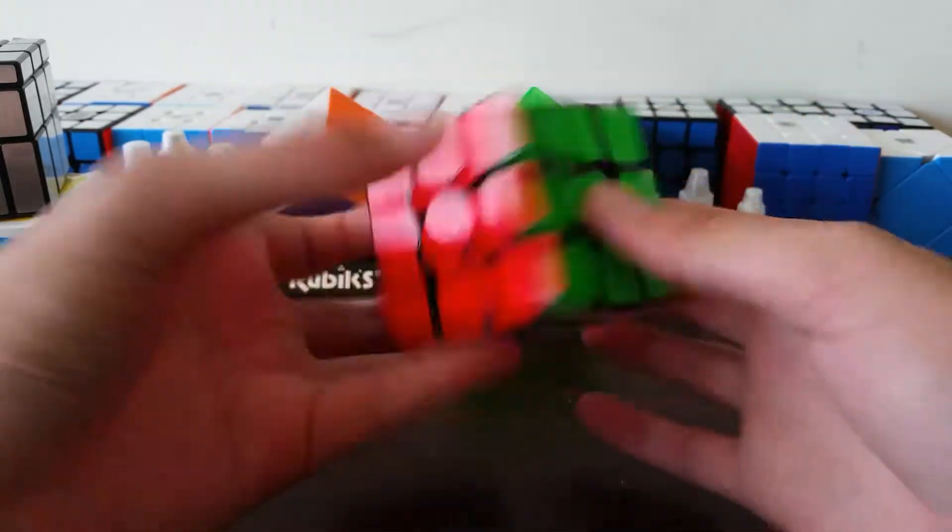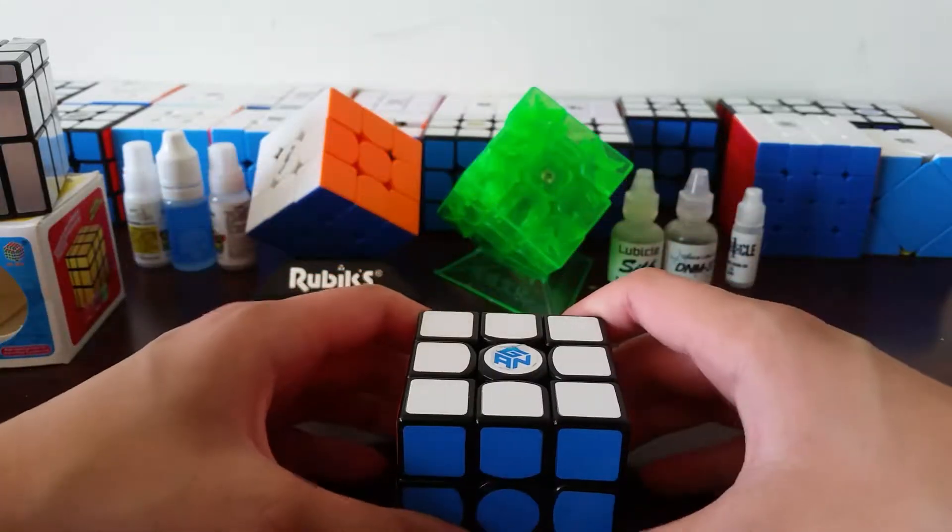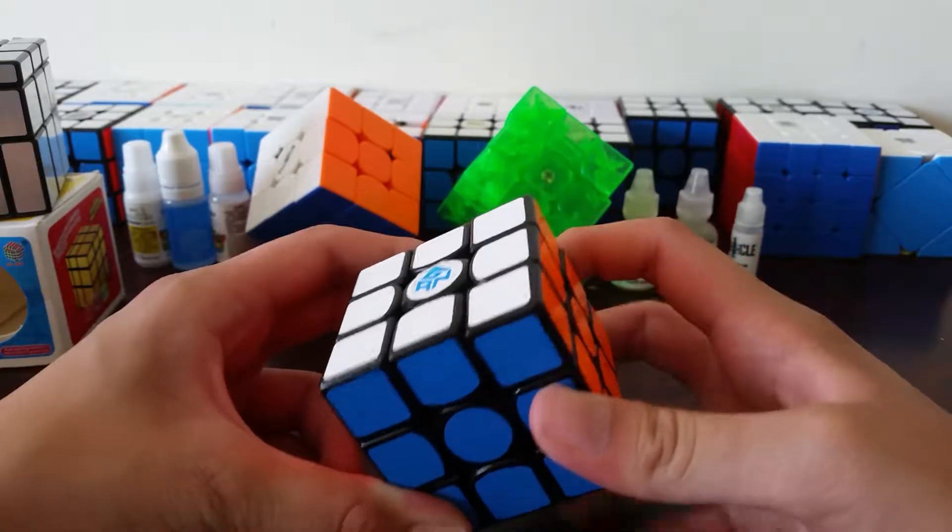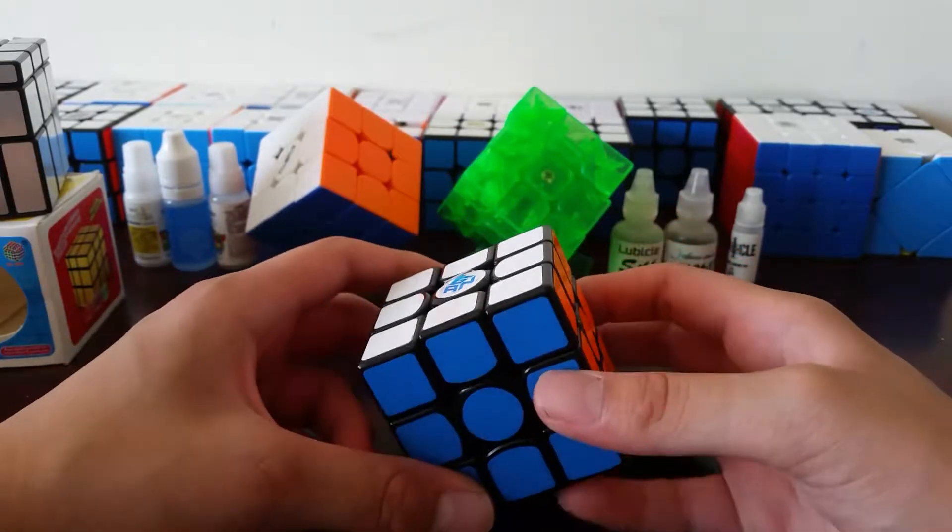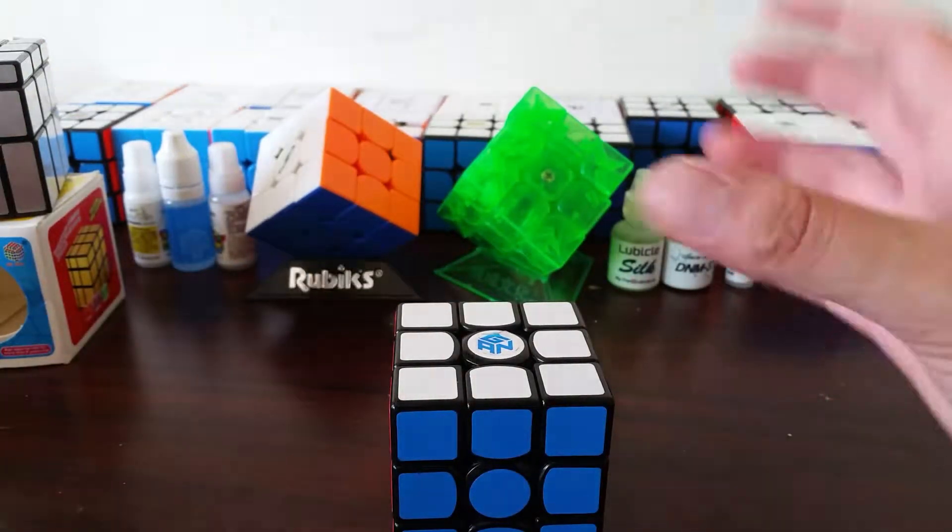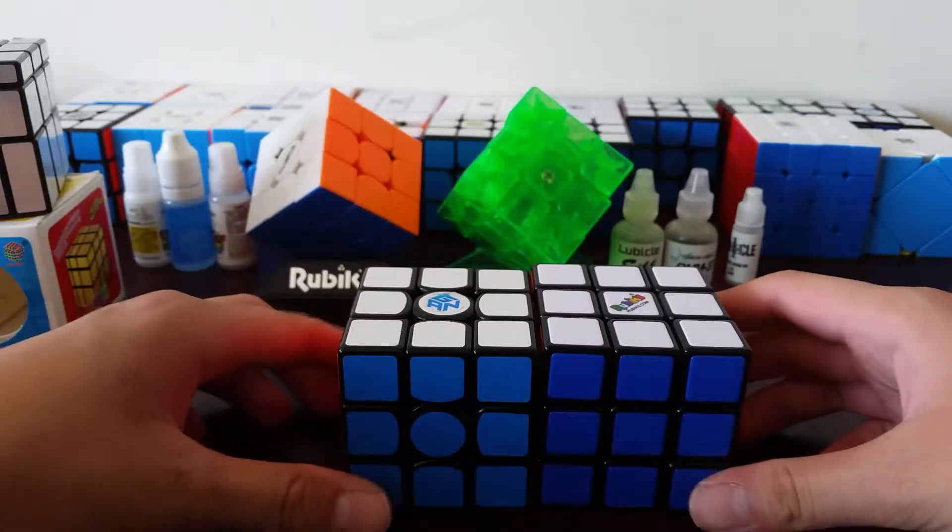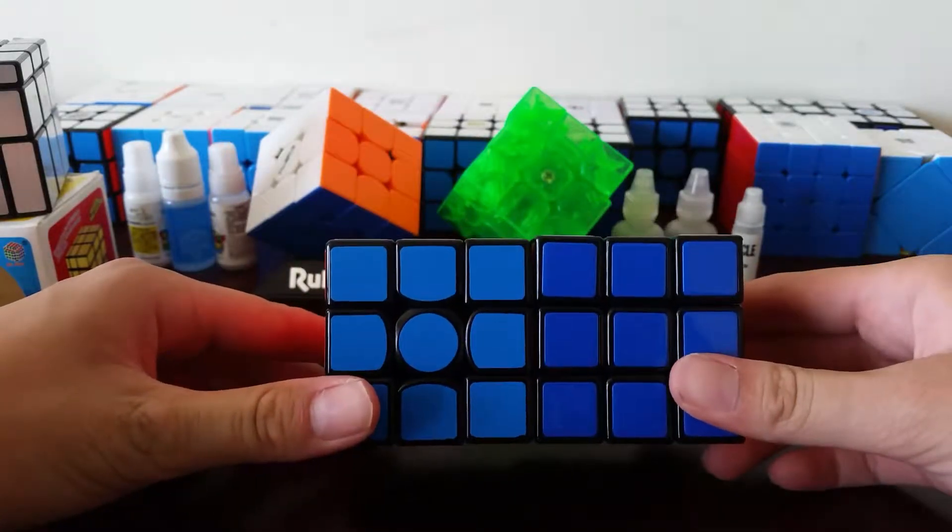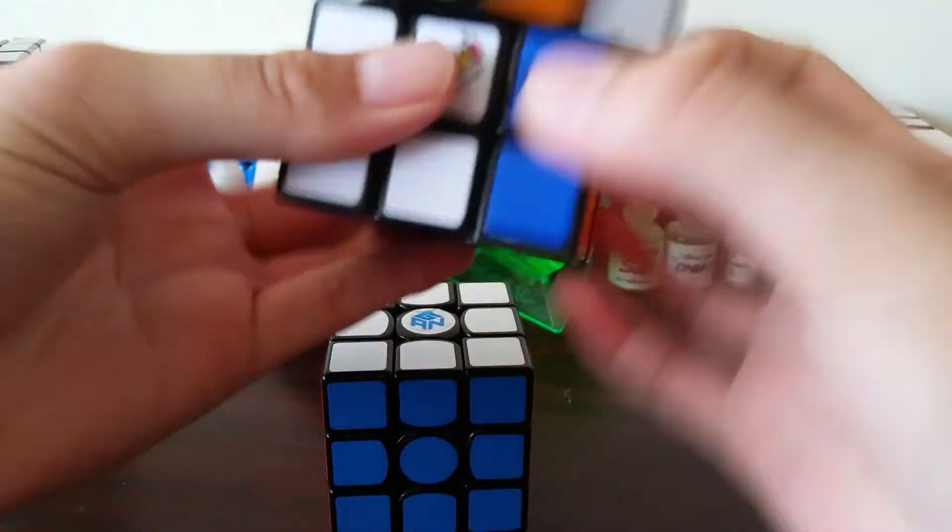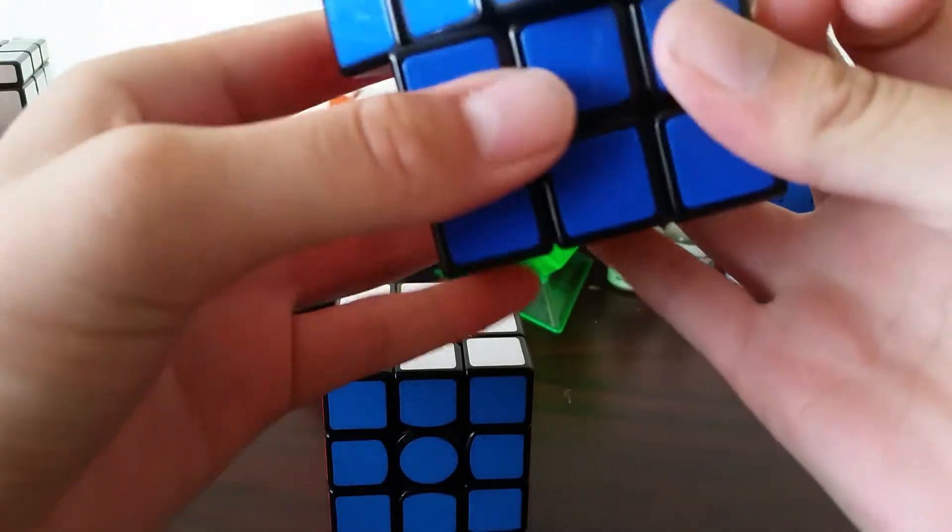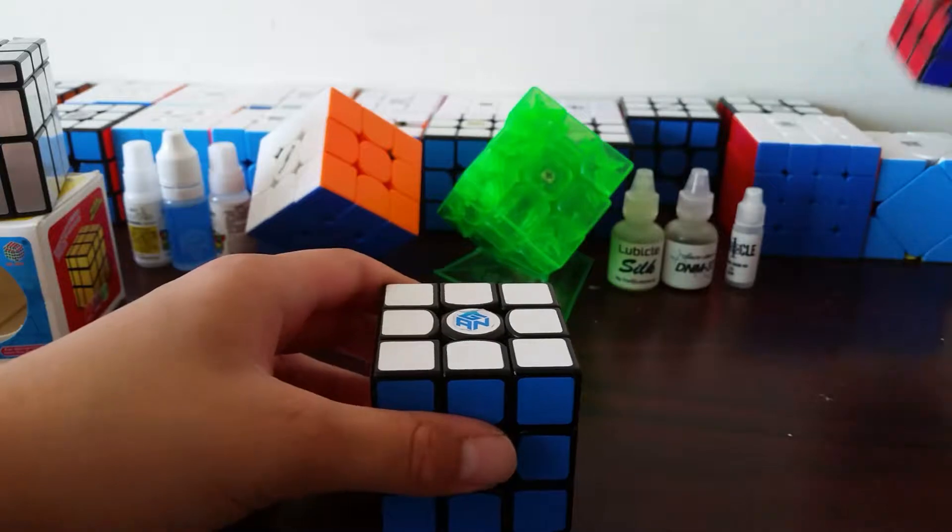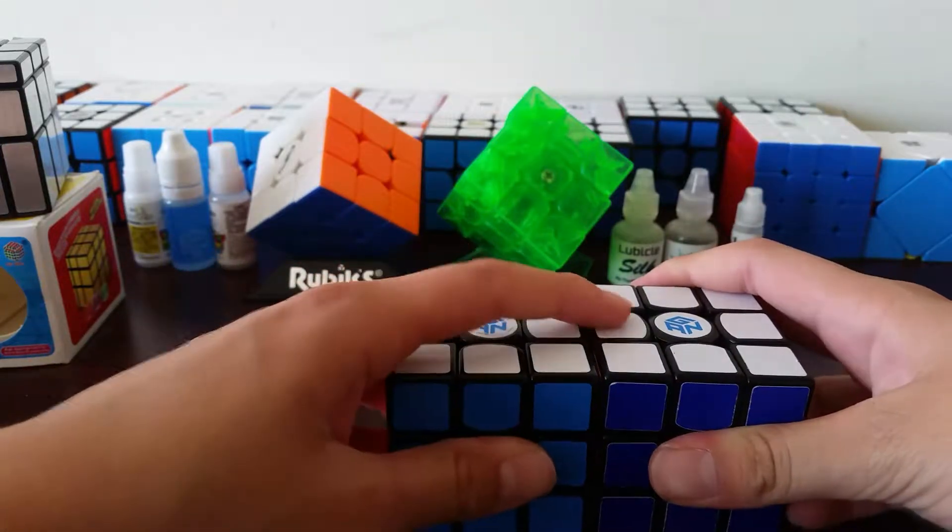So, general info: the size is 56 millimeters because it's 356. Obviously, comparing that to a 57 millimeter cube, you can tell there's a small difference, but it's not really that noticeable when solving. Anyways, 57 millimeters isn't really standard anymore. 56 is kind of the standard now. Alright, the GAN cube, it's the exact same.